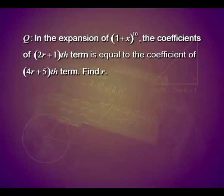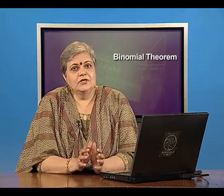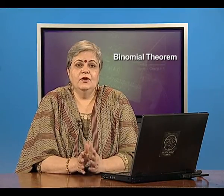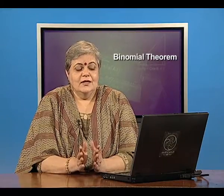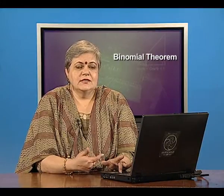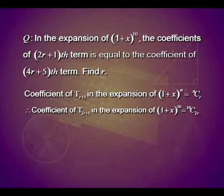The first problem says: in the expansion of 1 plus x raised to the power 10, the coefficient of the (2r+1)th term is equal to the coefficient of the (4r+5)th term. You have to find r. We are talking about the expansion of 1 plus x whole to the power 10, and the coefficient of the (2r+1)th term will be 10 C 2r. This follows from the fact that the coefficient of T(r+1) in the expansion of 1 plus x to the power n is n C r. Therefore the coefficient of the (2r+1)th term in the expansion of 1 plus x raised to the power 10 will be 10 C 2r.